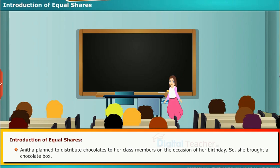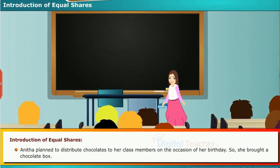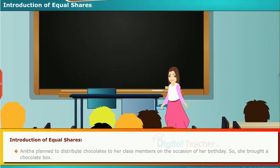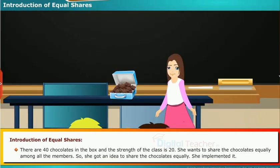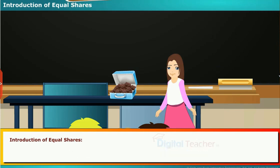Anita planned to distribute chocolates to her class members on the occasion of her birthday, so she brought a chocolate box. There are 40 chocolates in the box and the strength of the class is 20. She wants to share the chocolates equally among all the members. She got an idea to share the chocolates equally. She implemented it. Do you know how she calculated it?